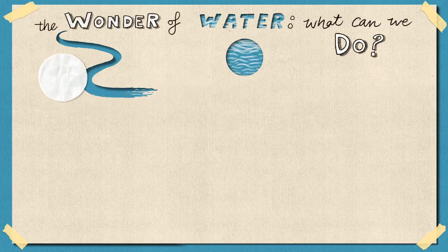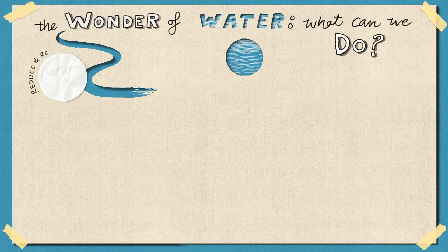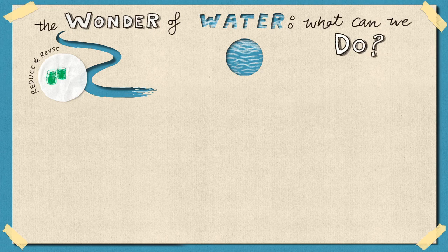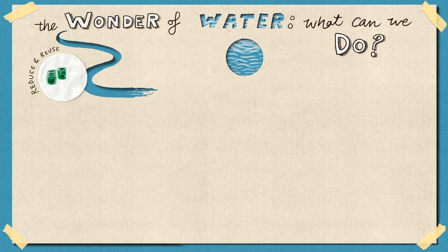Earlier, we spoke about how much of the pollution in rivers, oceans and lakes is from plastic things like bottles and food wrappers. If we use less of these items, we can ensure they won't end up in rivers, lakes or oceans.